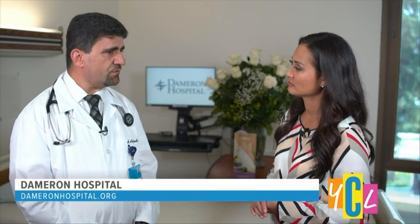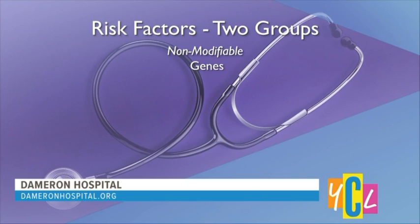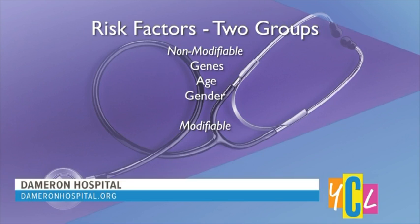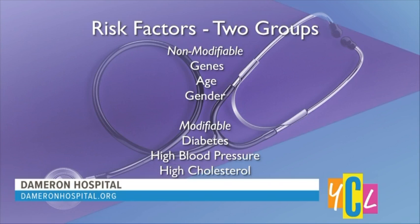What about risk factors? There are basically two major groups of risk factors for heart disease. The first group we call non-modifiable — things we cannot change — basically the things you are born with: your genes, your age (the older you get, the higher your risk), and your gender, whether male or female. But there are other risk factors that we can change or at least intervene to lower your risk, like having diabetes, high blood pressure, or high cholesterol.